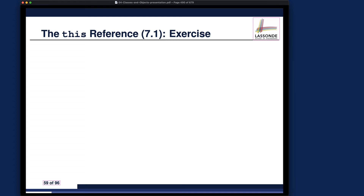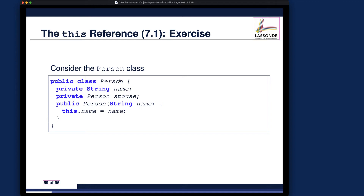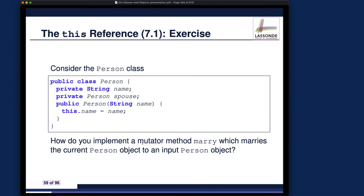Let's consider the following problem. We have a Person class with an attribute name and also spouse. The type of spouse is a reference type — specifically a class from our customized Java project, not from the Java library API. It's a class we created ourselves, so spouse is a single-value reference attribute that will store at runtime the address of some Person object. We also have a constructor that initializes the name of the Person object.